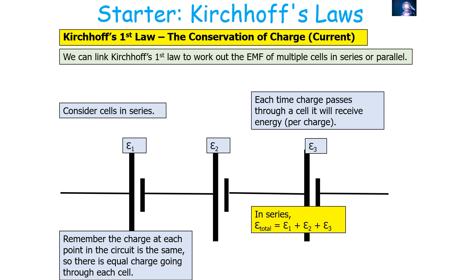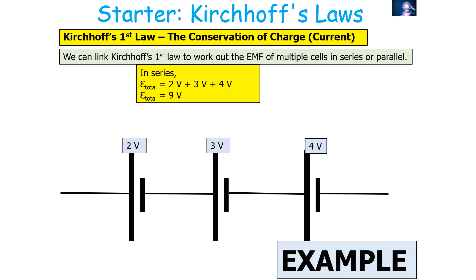Looking at an example: if we had three cells in series where the first cell has an EMF of 2 volts, the second 3 volts, and the third 4 volts, the total EMF is the three added together — 2 + 3 + 4 — which equals 9 volts.